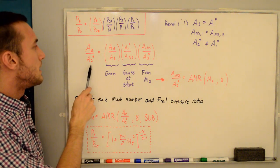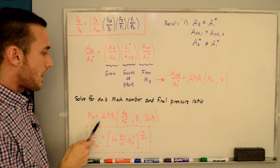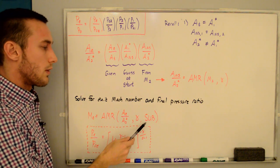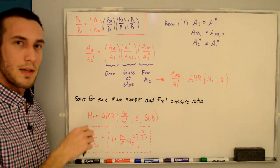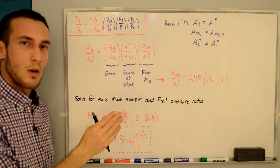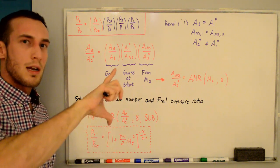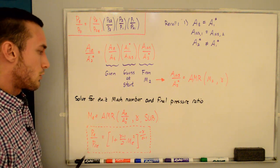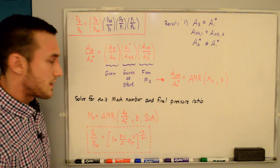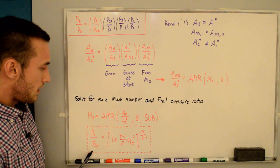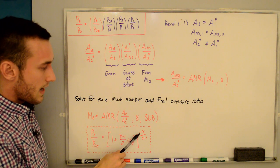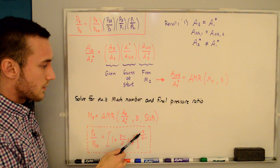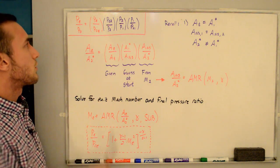With AE/A2* computed, we get the exit Mach number ME from the area-Mach number relation using the subsonic root, because after a normal shock the flow is subsonic and continues to decelerate as area increases toward the exit. Then PE/P0E is the stagnation-to-static relation with a negative exponent since it's static to stagnation. That is the final pressure ratio we needed.